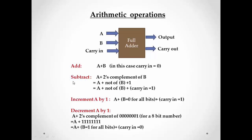When we want to subtract B from A, we know from digital electronics that we must add the two's complement of B with A, which gives A minus B. The two's complement of B equals NOT of B plus one. So to subtract B from A, we perform: A plus complement of B plus carry-in equal to one, which will be elaborated in the next slide.